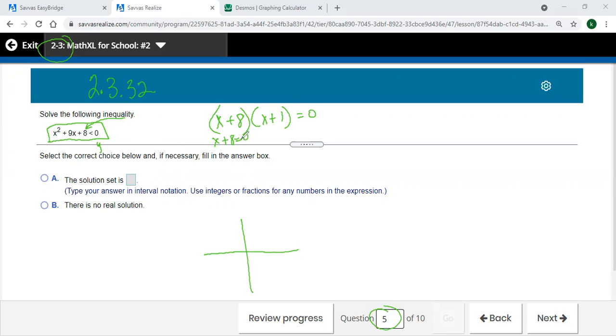And when you solved each of these for when does X plus eight equals zero, you get a negative eight. You subtract the other side. X plus one equals zero, subtract the one to the other side. So your two X intercepts here would be the negative eight and the negative one.